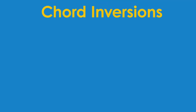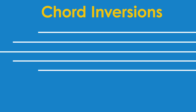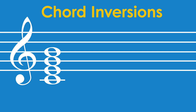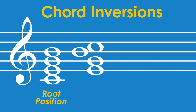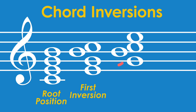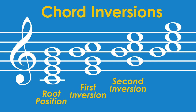Just like triads, seventh chords can come in different inversions. Remember that an inversion happens when the lowest note of the chord is not the root. So if we take this seventh chord as an example, here it is in root position because the root is in the bass. We could have the third of the chord in the bass, also called first inversion. Then we could have the fifth in the bass, also called second inversion. And lastly, we could have the seventh in the bass, also called third inversion.